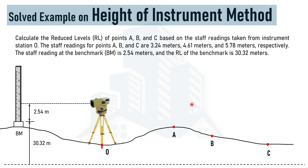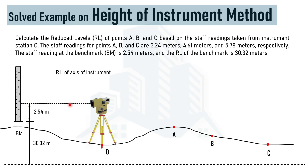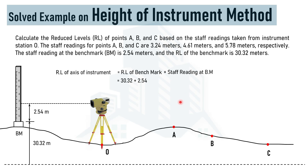Since we are using the height of instrument method, we must first determine the reduced level of the axis of the instrument. As discussed in previous videos, this is calculated by adding the reduced level at the benchmark plus the staff reading at the benchmark: 30.2 + 2.54 = 32.86 meters.